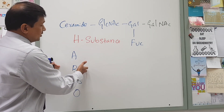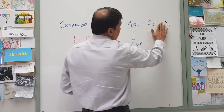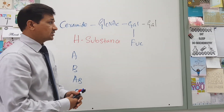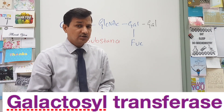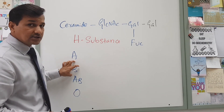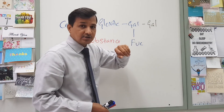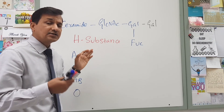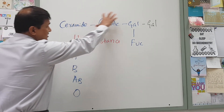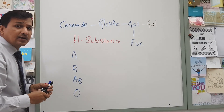Now coming to the B blood group type. A B blood group person will have H substance, and along with the H substance they just have galactose being added. Now who adds galactose to the H substance? There is an enzyme called galactosyltransferase. Galactosyltransferase is responsible for the addition of galactose, making the B antigen. Similarly, for A antigen, N-acetylgalactosamine is added by an enzyme called N-acetylgalactosamine transferase. So this is the B antigen because galactose is added to the H substance, and the person has B blood group.